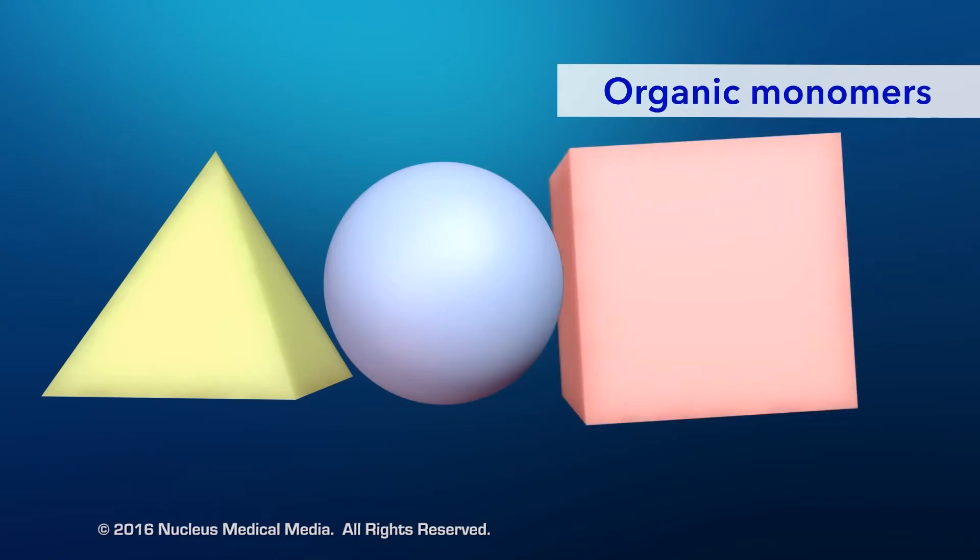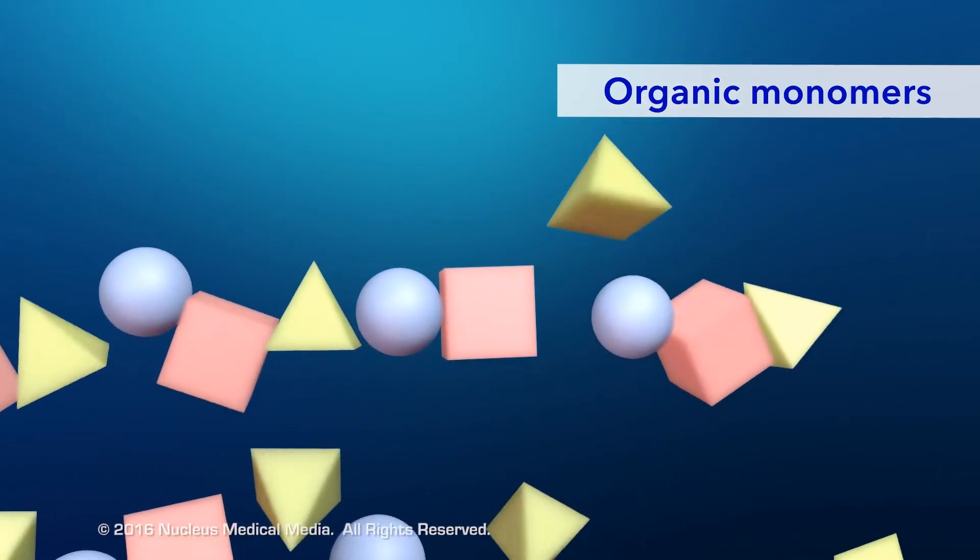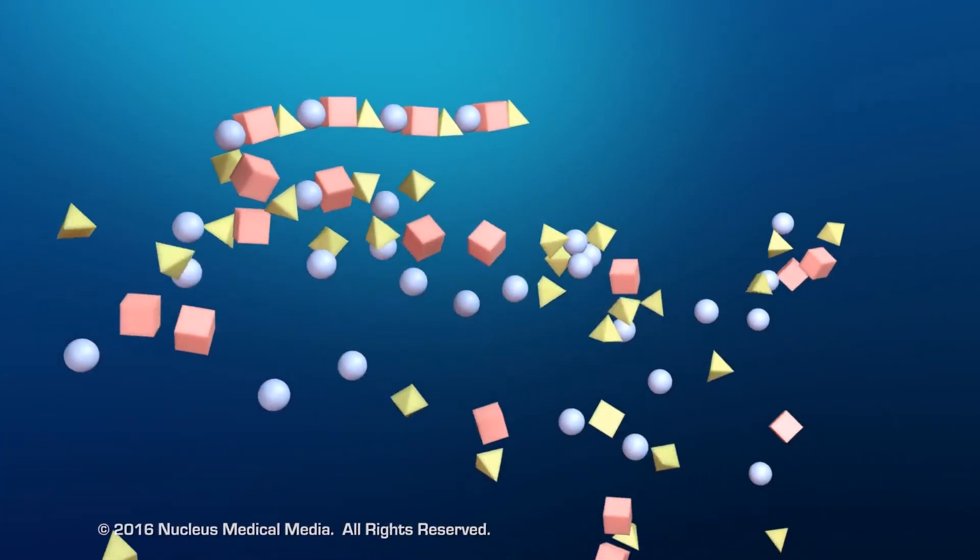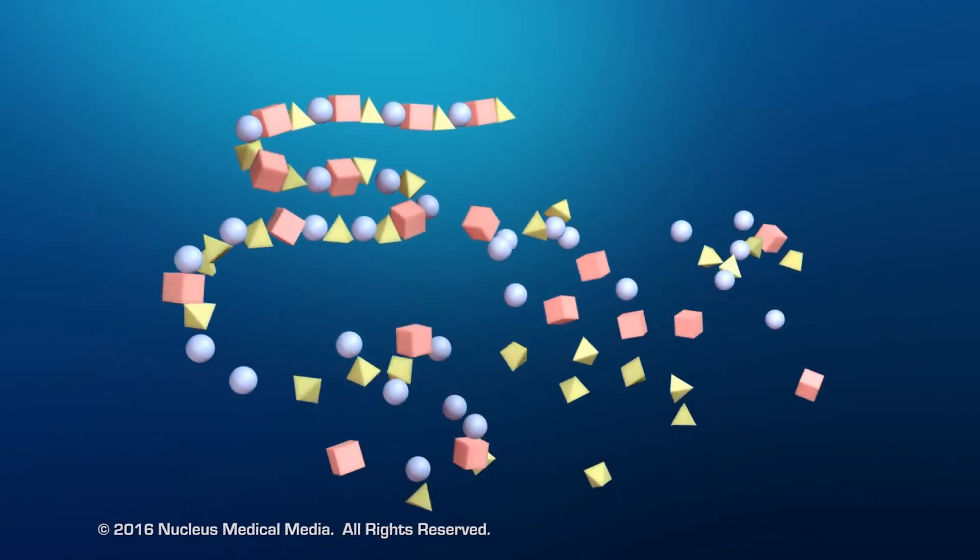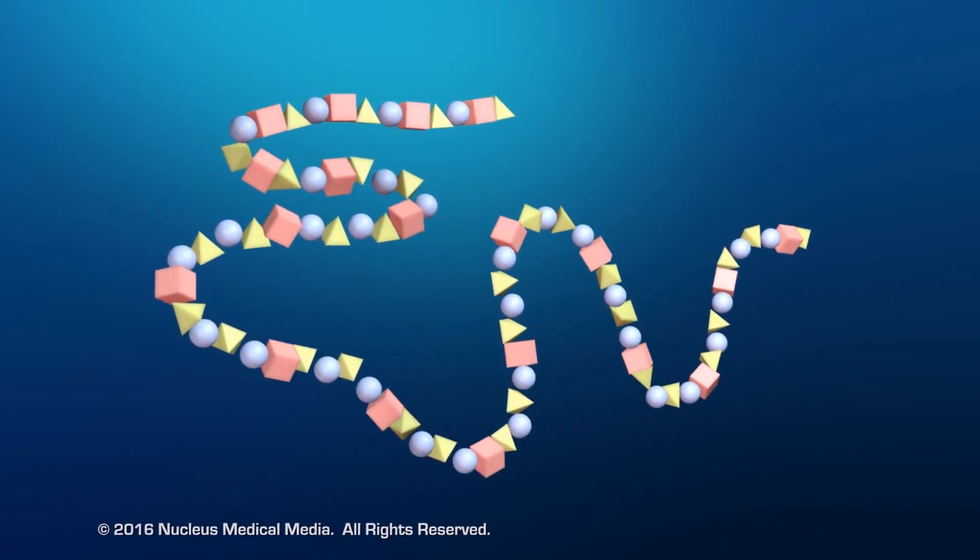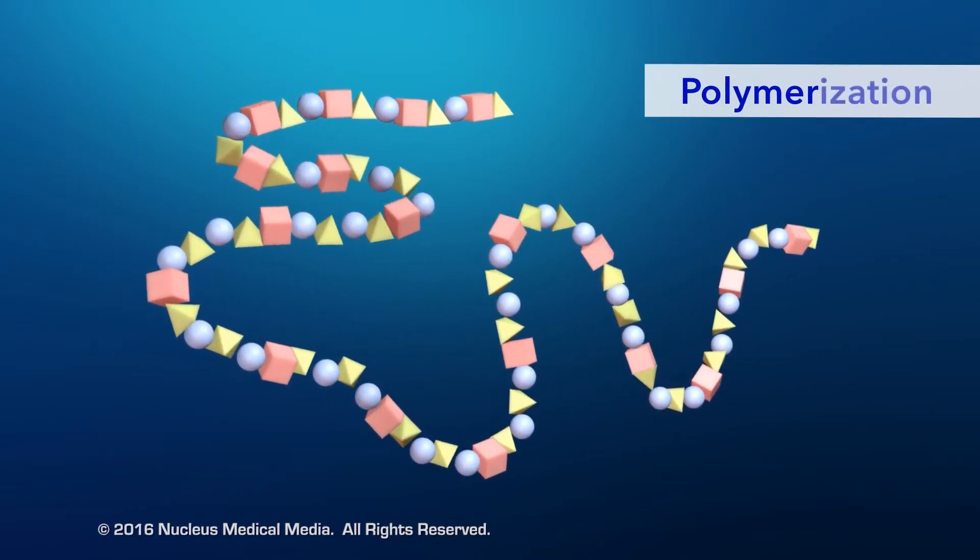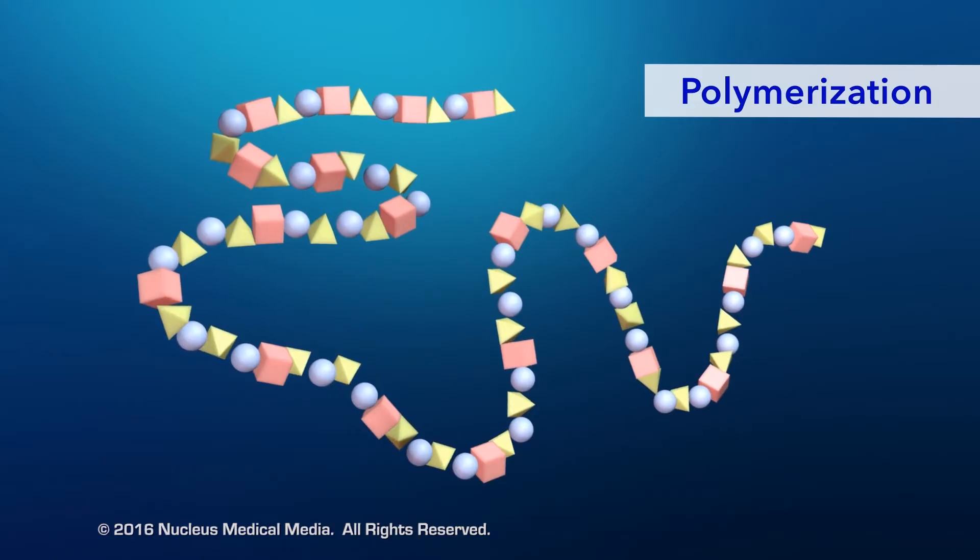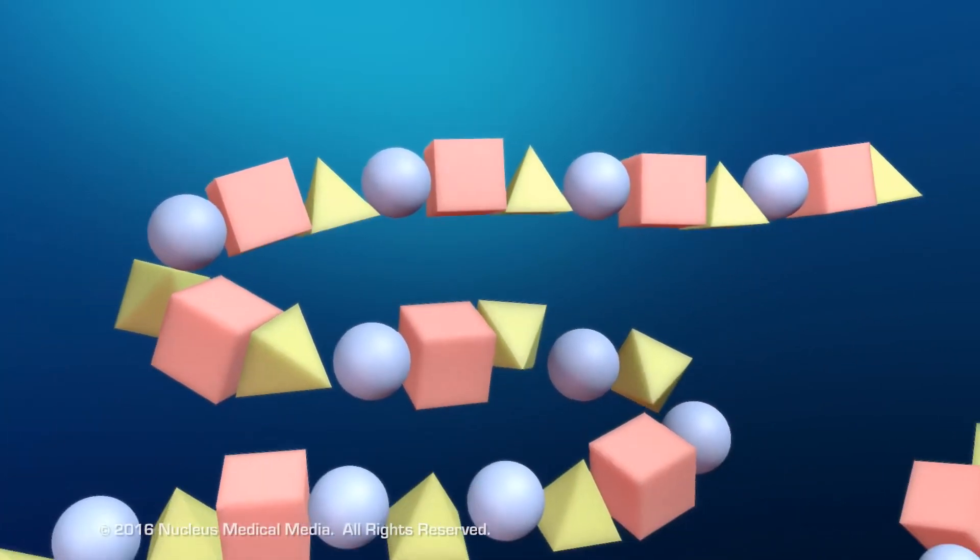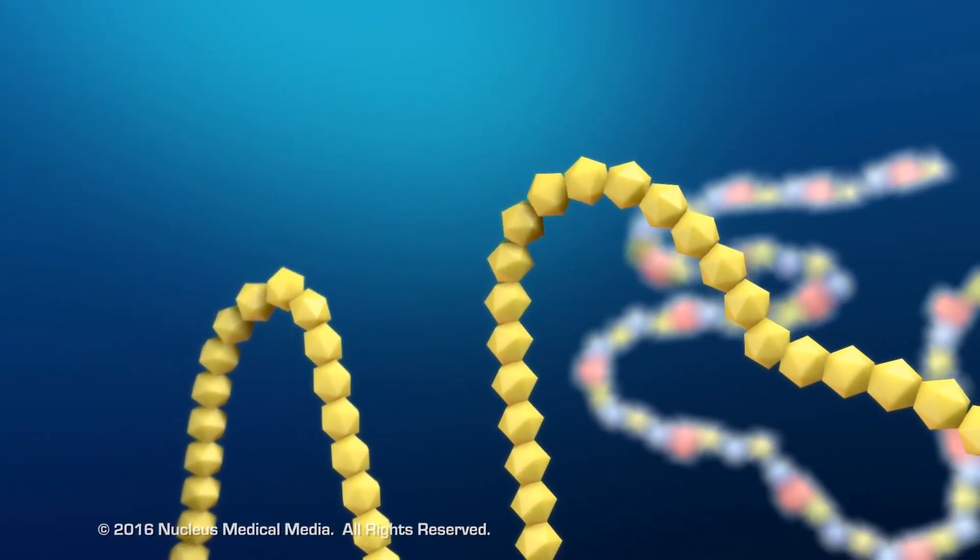Organic monomers often chemically bond to each other, joining together like beads on a string. This string of attached monomers will often continue to chemically bond with additional monomers, creating a much larger molecule called a polymer. This process is called polymerization. Polymers may be made of different monomers, or repeating units of the same monomer.